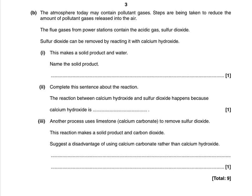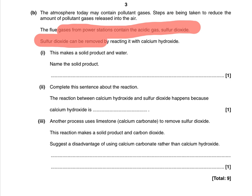Next question, and we're faced with one that could potentially be a bit trickier. The atmosphere today may contain pollutant gases; steps are being taken to reduce the amount. It talks about flue gases from power stations containing sulphur dioxide, and it says sulphur dioxide can be removed by reacting it with calcium hydroxide — it makes a solid product and water. Name the solid product. If you know it, fine; if not, there's maybe a way of figuring it out.